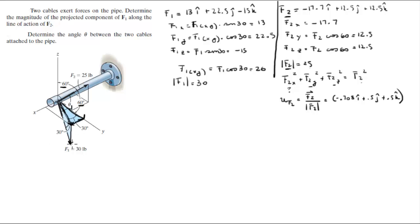So now that you have this vector, if you wanted the projection of F1 along F2, all you do is the dot product of F1 along the unit vector of F2. F1 is 13i plus 22.5j minus 15k dot negative 0.708i plus 0.5j plus 0.5k. So 13 times negative 0.708 is negative 9.204, plus 22.5 divided by 2 is 11.25.